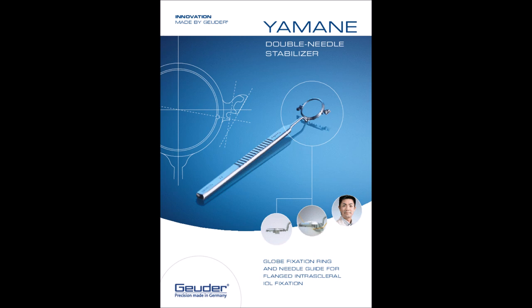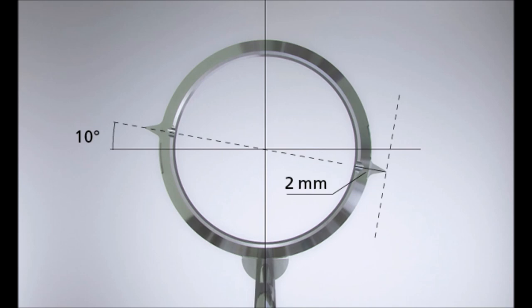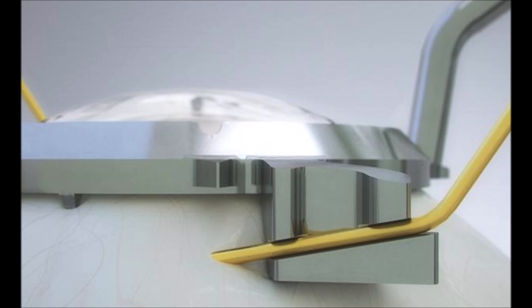It's supposed to bring more consistency, more reliability, more proper placement of the needles and the proper angles. As you can see here, there's a two millimeter demarcation line where you're supposed to pass the needle through the instrument. It has a needle guide right here that actually guides and tracks the needle into the sclera.